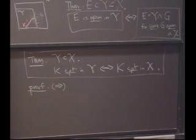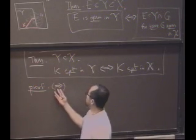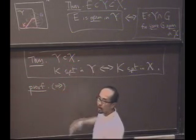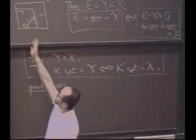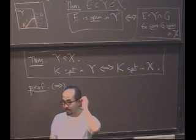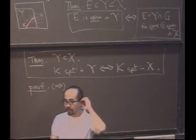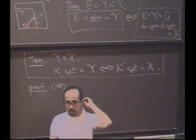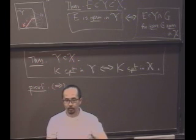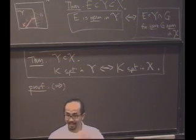So we're going to assume—what is the forward direction? What's the hypothesis? We're assuming that K is compact in Y. That means given any cover of this red set by yellow sets, I can find a finite subcover by yellow sets. With me? That's what I'm allowed to use if I need it.